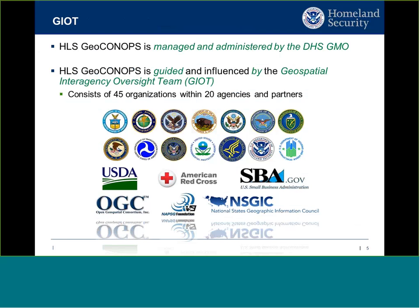The GIOT consists of 45 organizations within 20 different agencies and partners. NAPSIG is a valuable partner and represents the people on the phone today in its entirety. We meet on an annual or semi-annual basis to review the direction of the ConOps, include input, and steer it — deciding what needs to be in there, what needs to be pulled out, what needs to be added. It's a whole-community approach to capturing that concept of operations for the geospatial community.